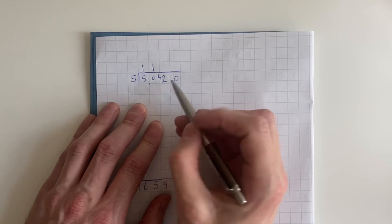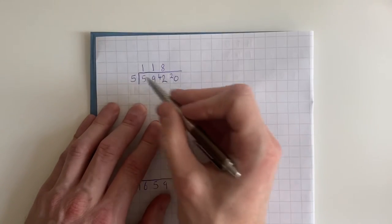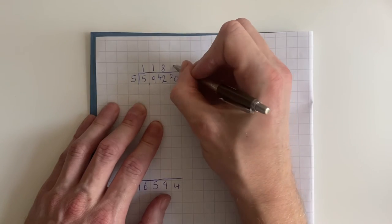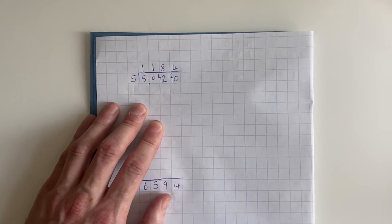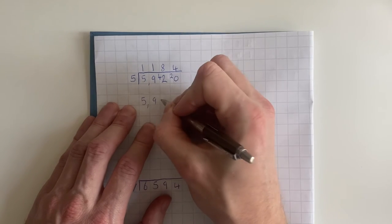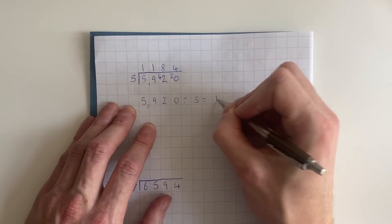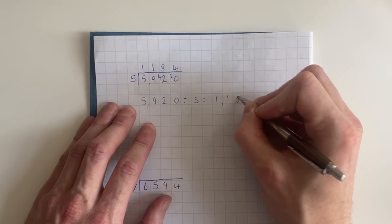How many fives go into 42? Eight and we have two remaining, five goes into twenty four times. So five thousand nine hundred and twenty divided by five equals one thousand one hundred and eighty four.